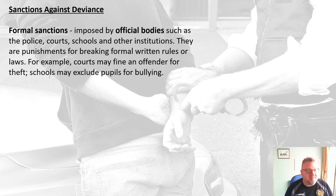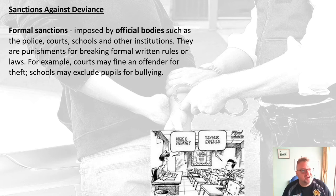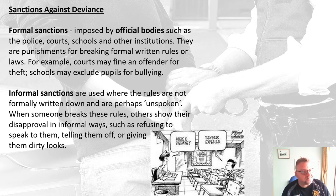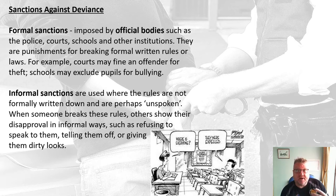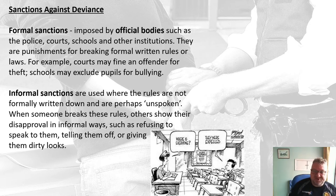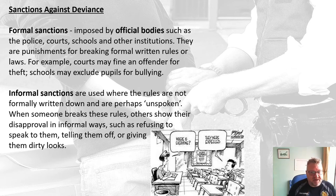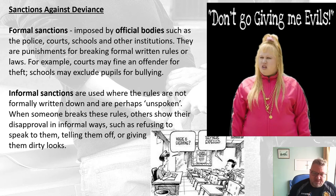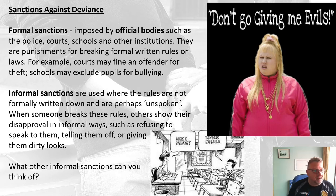You then have informal sanctions, which you use when rules aren't formally written down — they're more unspoken. When someone breaks these rules, others show their disapproval in informal ways, such as refusing to speak to them, telling them off, giving them dirty looks, that sort of thing. Tutting at someone or giving evils would be an informal sanction.